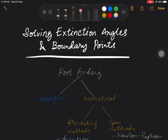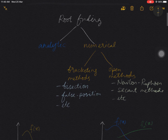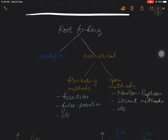Extinction angle and boundary points are fundamental problems that often arise in AC to DC power converters, more commonly known as rectifiers. The extinction angle and boundary point occur in power converters due to the presence of energy storage elements, namely the inductor and capacitor. We call the extinction angle and boundary points generally as the roots — the roots in an equation.